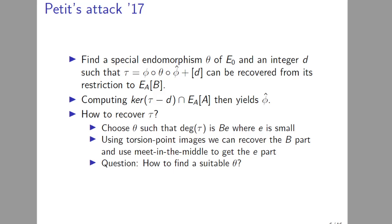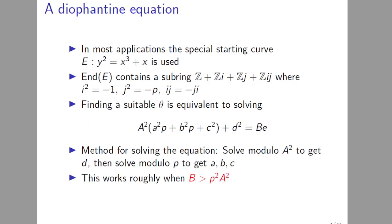And then the natural question: how do you find such a τ? What restrictions do you impose on θ? You choose θ in a way that the degree of τ is B times e where e is something small, because then you can recover the B part of τ just using the torsion point images, and then the e part can be recovered by some meet-in-the-middle algorithm. And then the next question is, how do you find such a θ? In general, when you know nothing about the endomorphism ring of E_0, this is a hard problem because for generic random curves you usually don't know any non-scalar endomorphisms.